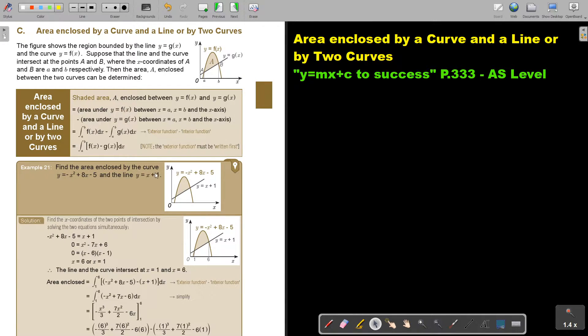Find the area enclosed by the curve and the line. Now first you have to find the point A and B or those points of intersection. So solve the two, find the X coordinates of the two points of intersection by solving the two equations simultaneously.